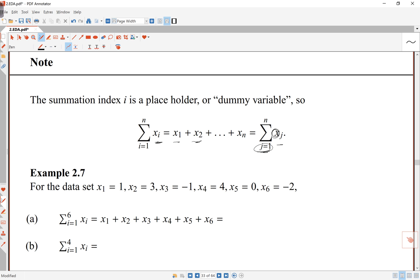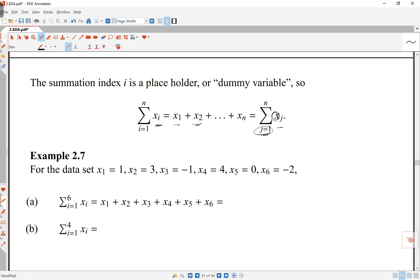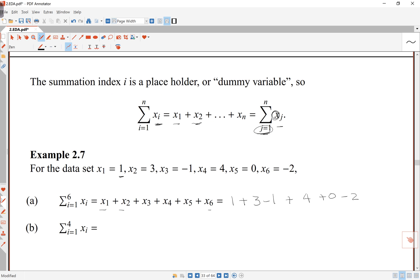As an example, I've got the numbers x1 is equal to 1, x2 is 3, and so on. If I'm looking at the sum from 1 to 6 of xi, that is x1 plus x2 up to x6. If I add the numbers, I'm going to get 1 plus 3 minus 1 plus 4 plus 0 minus 2. So x1 is 1, that's my first number. x2 is 3, that's my second number. x3 is negative 1, that's my third number.